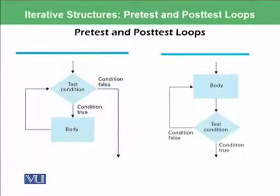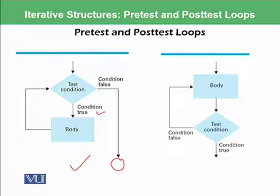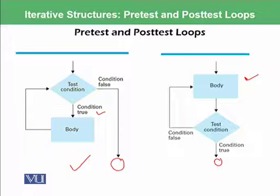Let's look at an example using a flowchart. On the left side, we have the test condition first, and if the condition is true then the loop enters into the body, then goes back to the condition. If the condition is false then the loop is terminated. However, in another kind of loop we first enter into the body of the loop, then check the condition. If the condition is true we end the loop, and if the condition is false the loop executes again. In some languages, on a true condition it will go back to the body and on a false condition it will end.